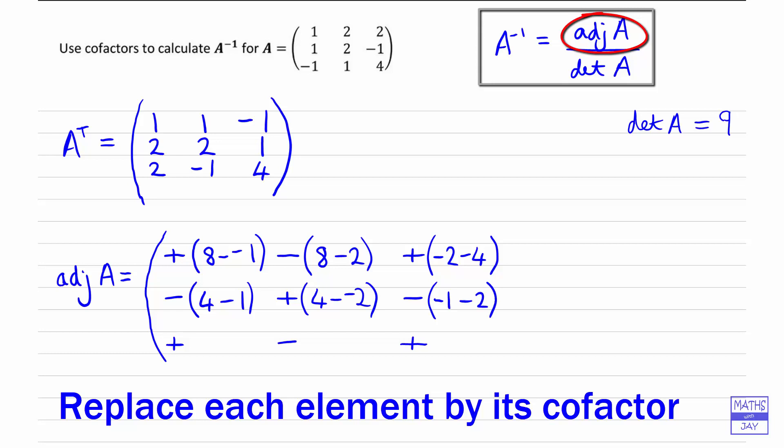And then the last row, we're going to have 1 times 1 minus negative 2. So 1 minus negative 2, and then 1 times 1 minus negative 2 again. And the last one, we're going to have 1 times 2 minus 1 times 2. So 2 minus 2.